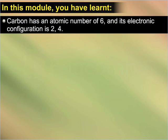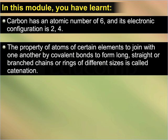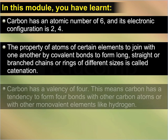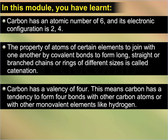In this module, you have learned: Carbon has an atomic number of 6 and its electronic configuration is 2, 4. The property of atoms of certain elements to join with one another by covalent bonds to form long, straight or branched chains or rings of different sizes is called catenation. Carbon has a valency of 4, meaning it tends to form 4 bonds with other carbon atoms or with other monovalent elements like hydrogen.